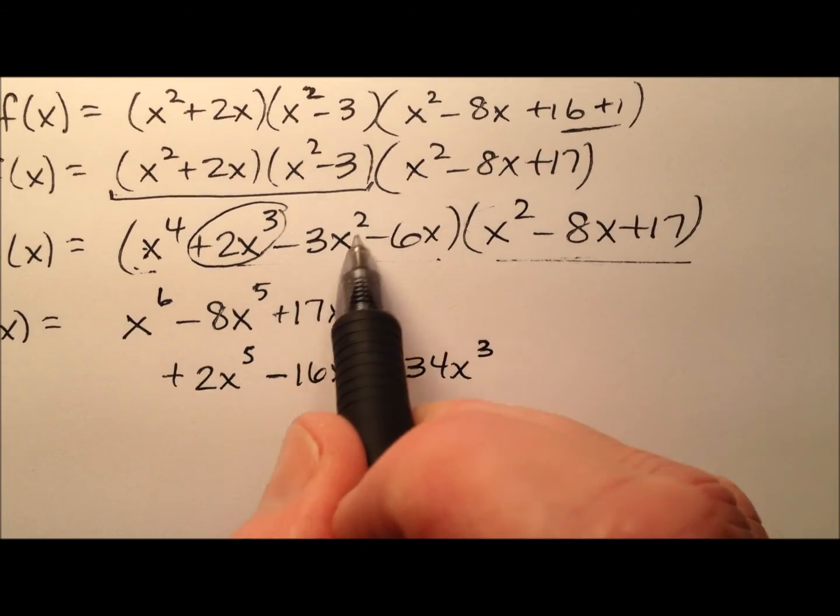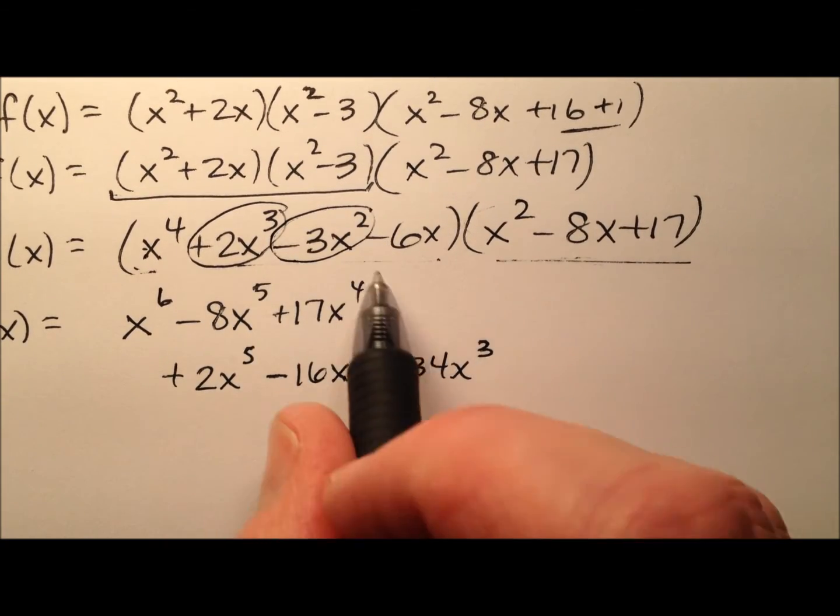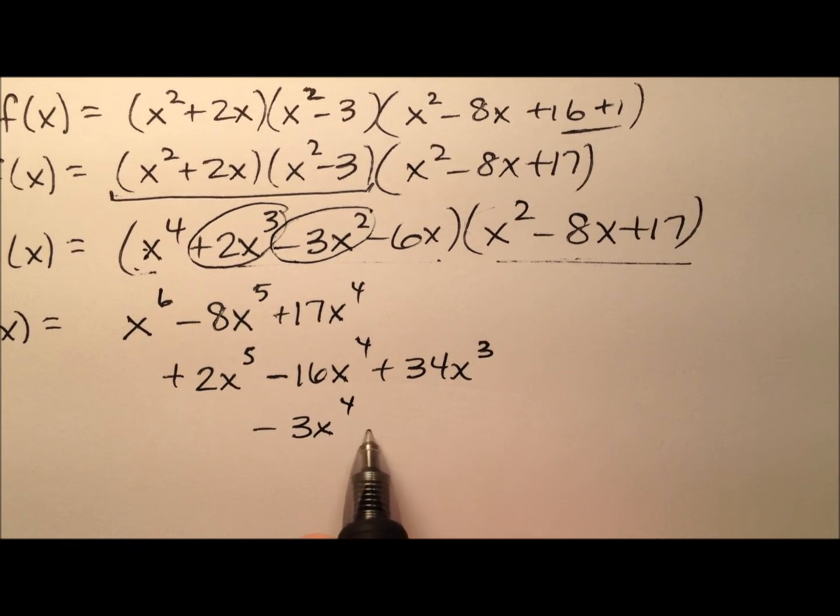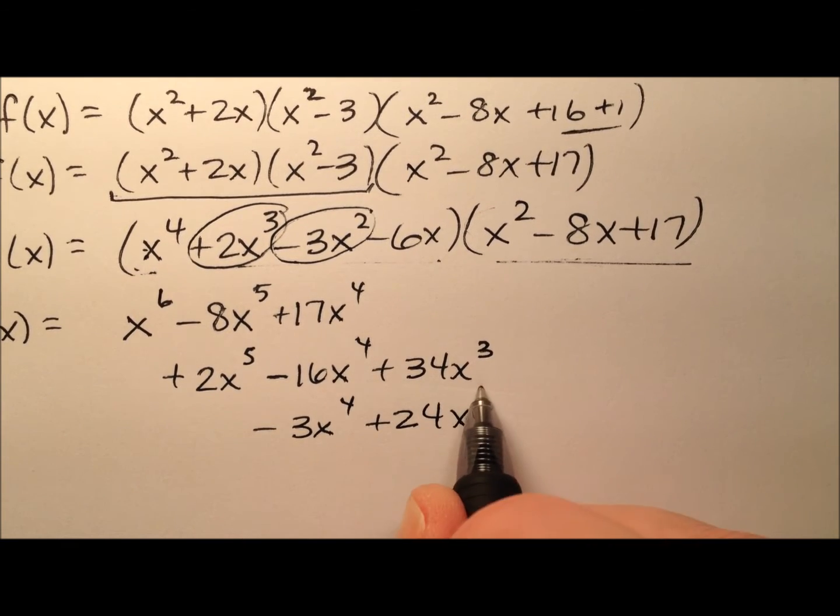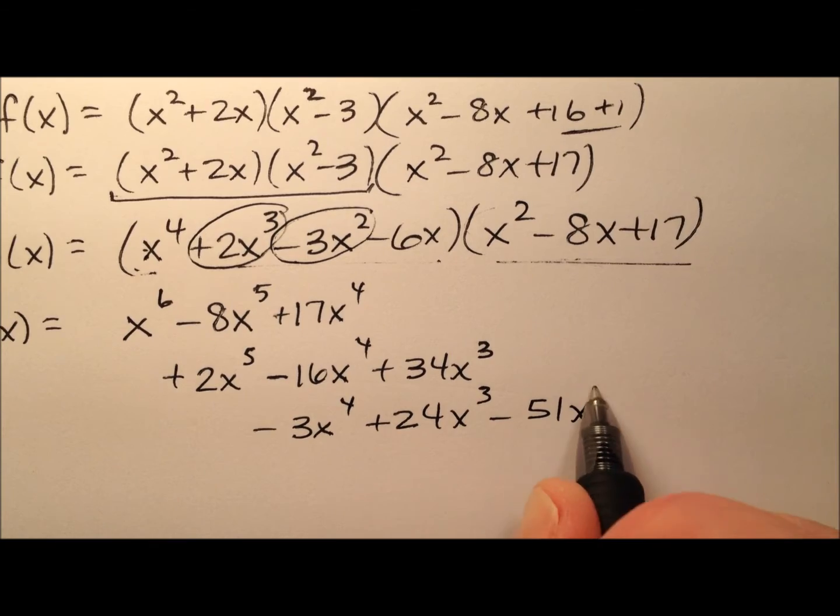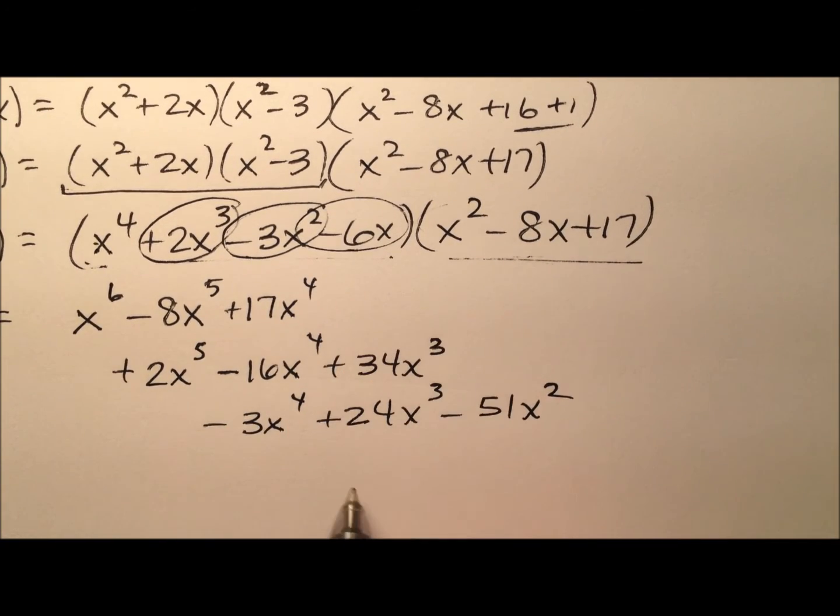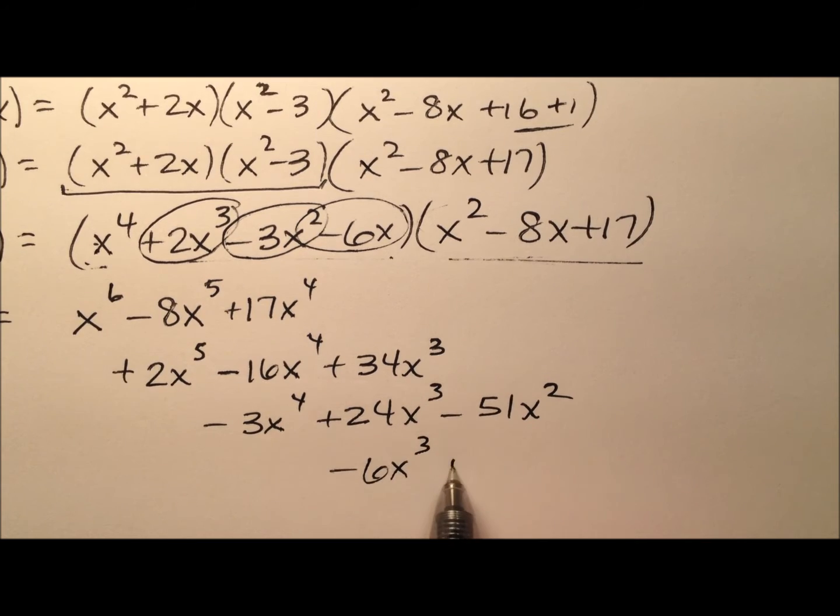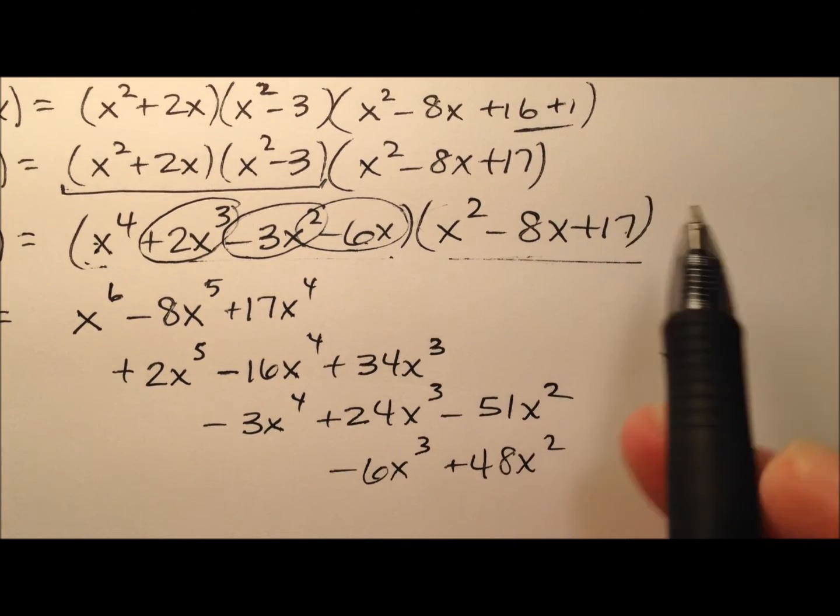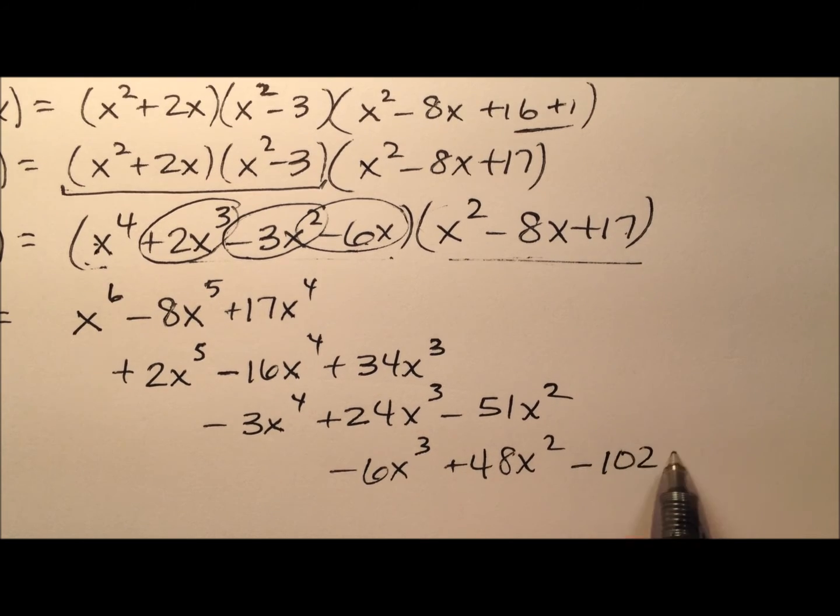And moving along, the negative 3x squared now. So negative 3x to the fourth plus 24x cubed minus 51x squared. Last one, negative 6x. So negative 6x cubed plus 48x squared. And then we have a 6 times a 17 is negative 102x.